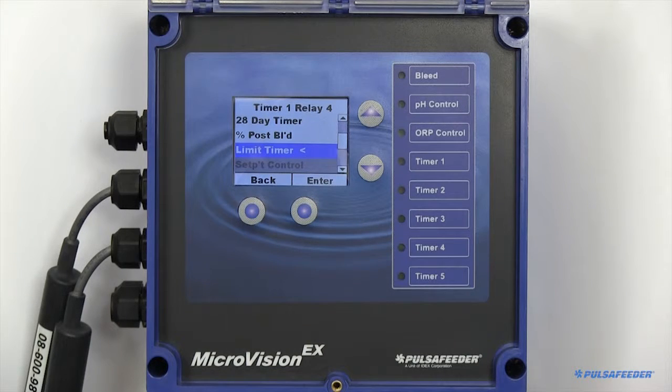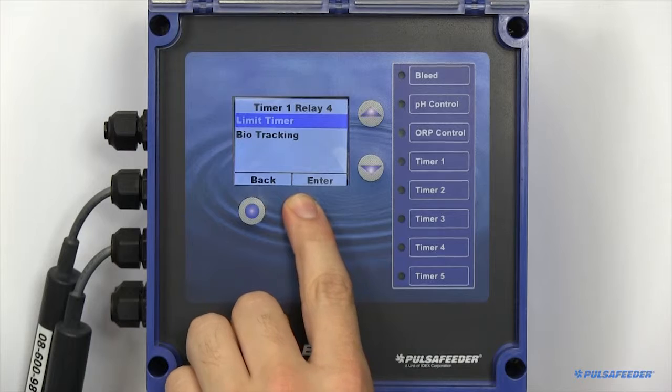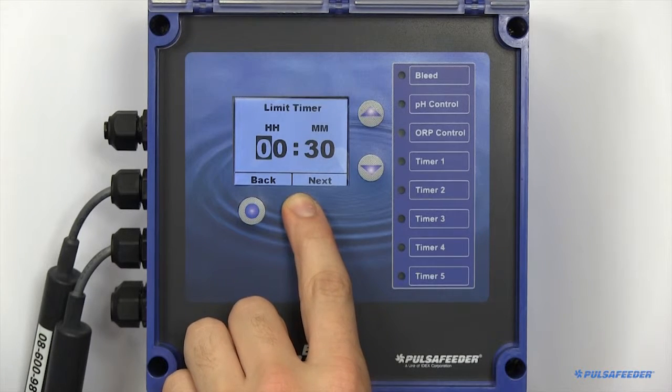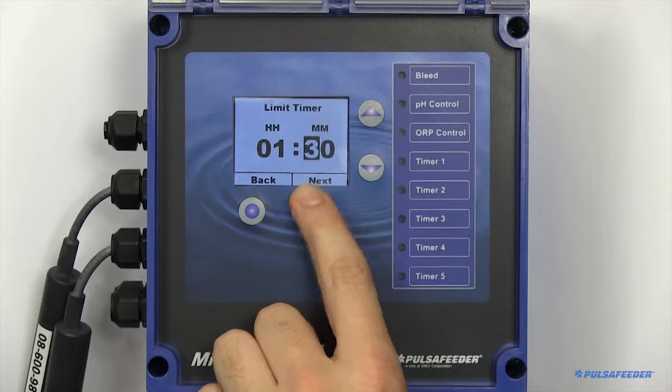A limit timer, also known as a bleed and feed timer, will mirror your bleed relay. This timer also has its own independent limit timer.